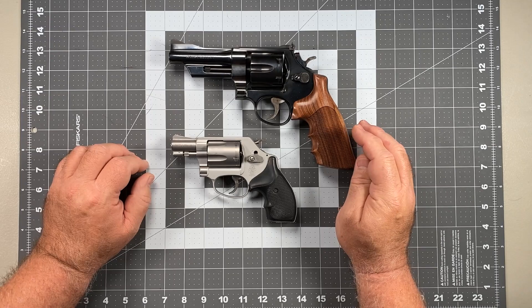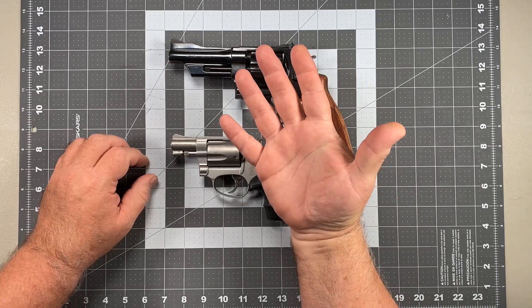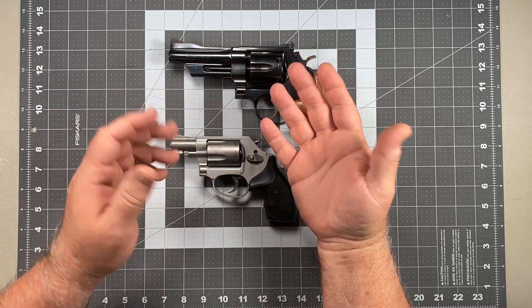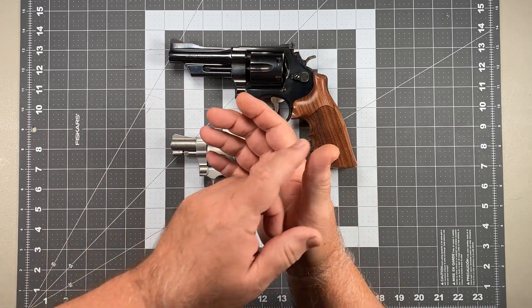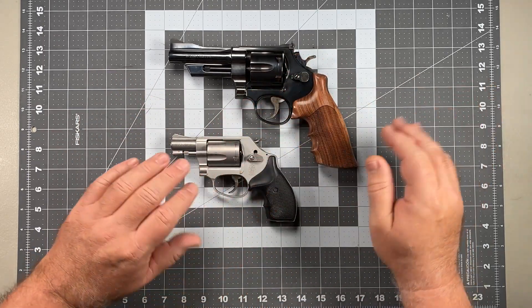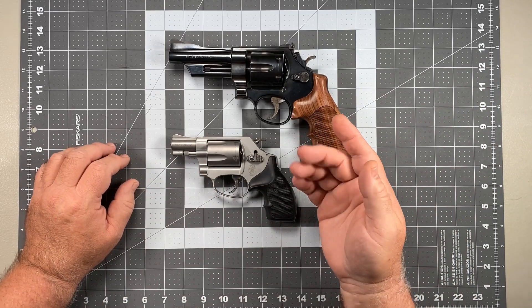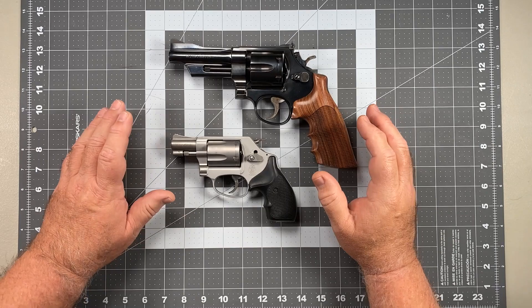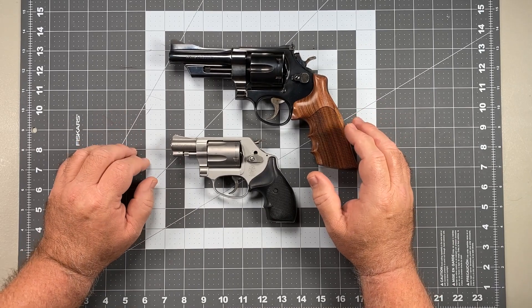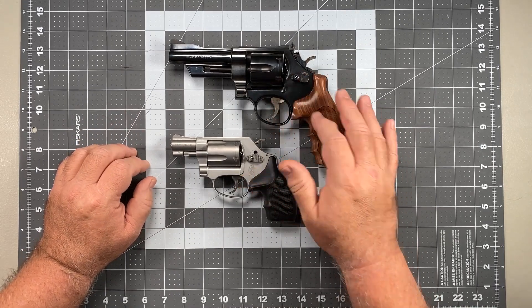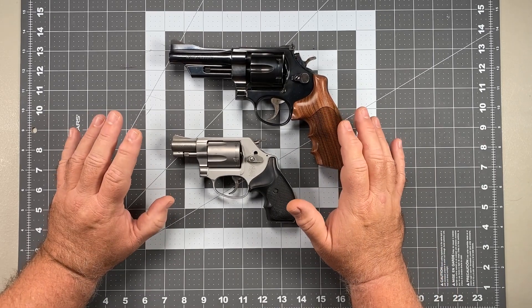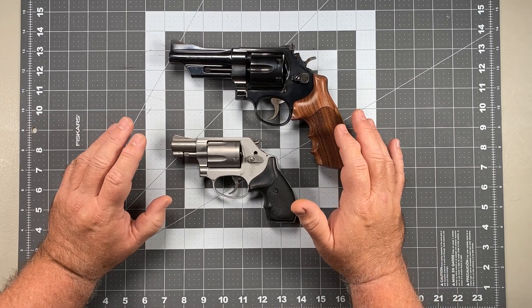The first of the fundamentals that we're going to cover - the five fundamentals are stance, grip, sight picture, trigger control, and follow-through. We're going to be doing stance in a separate video on the range, but the first of the fundamentals is going to be one of the most important. Even though we're talking about trigger control, our grip is going to form the foundation of everything that we do in operating the trigger on a double action revolver.